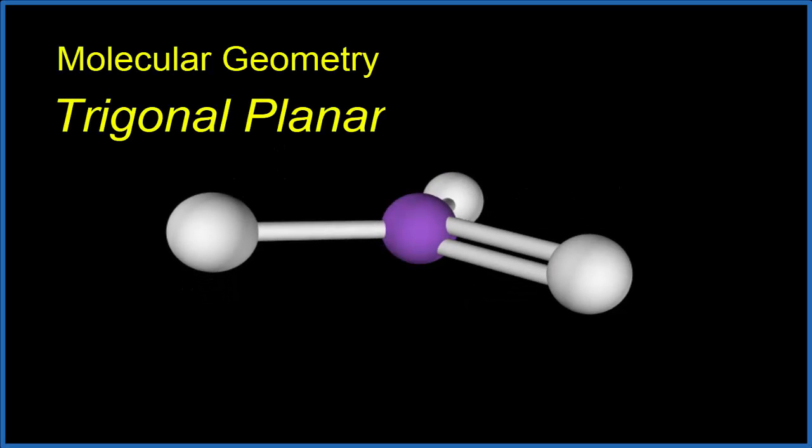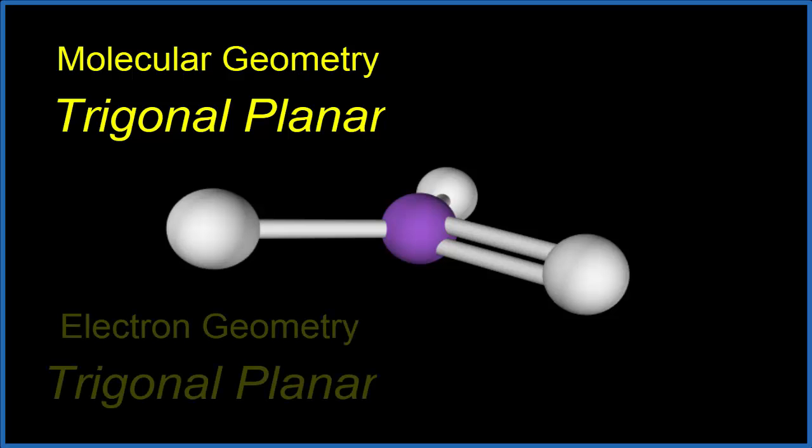We end up with what's called a trigonal planar molecular geometry. Since there are no lone pairs, the electron geometry is also trigonal planar.